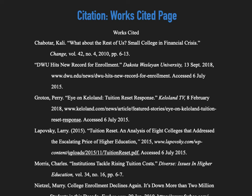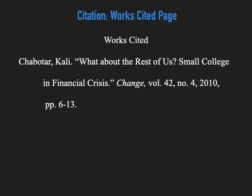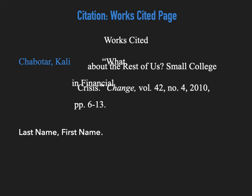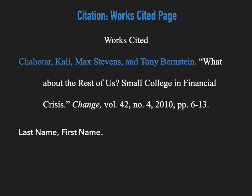Now that we have covered the general layout of the works cited page, let's look at how to cite specific sources. Peer-reviewed journal articles are the gold standard of credibility. Therefore, we should be familiar with the citation format of these sources. Let's take a look at the first source of this works cited page, which is from a scholarly journal. For scholarly journal articles, we will begin with the author's name. The author's last name is presented first, then we include a comma, after which we provide the author's first name. We end the author portion of the citation with a period. If the journal you are citing has two or more authors, all subsequent authors' names are separated by commas, and the subsequent authors' names are presented first name then last.